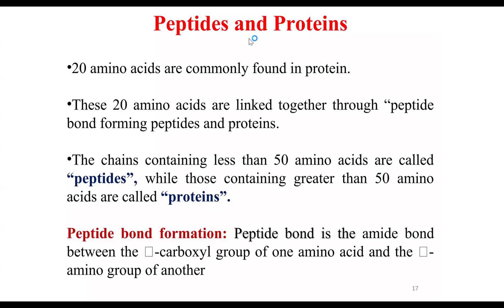Peptides are formed when you have 2, 3, 4, up to 49 or 50 amino acids linked together through peptide bonds. Those chains of amino acids that have more than 50 amino acids are called proteins.